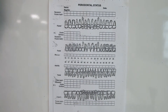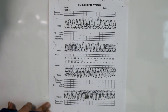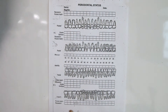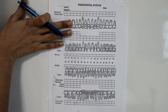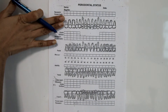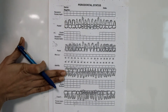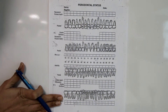Dear students, let me explain what the periodontal charting form is and how we assess the periodontal status of the patient using this form. As you can see, this is the complete periodontal status charting form, which includes both maxillary teeth with buccal surfaces and palatal surfaces, and similarly mandibular teeth with facial surfaces and lingual surfaces.